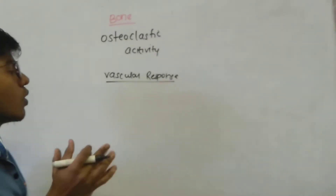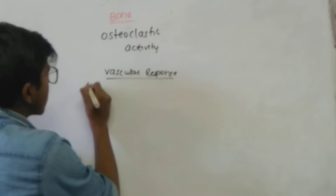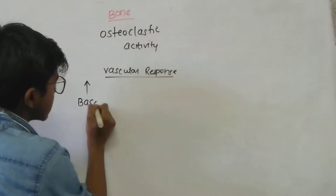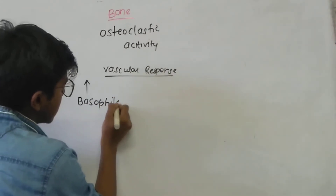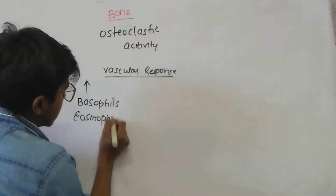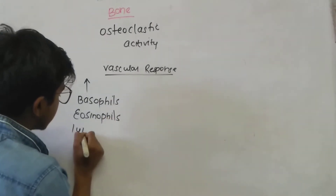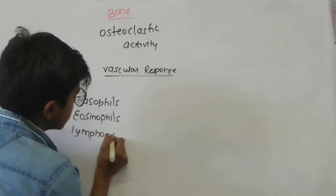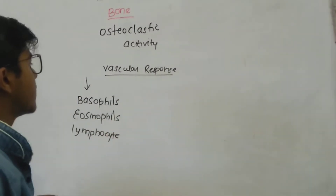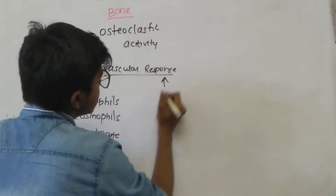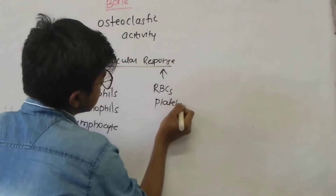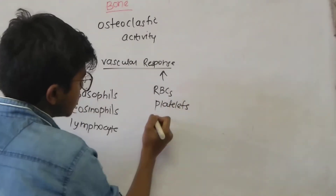Regarding the vascular response: glucocorticoids, or cortisol, will decrease the concentration of basophils, eosinophils, and lymphocytes, but will increase the number of RBCs, platelets, and neutrophils.